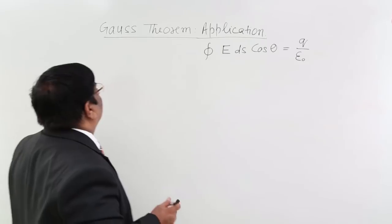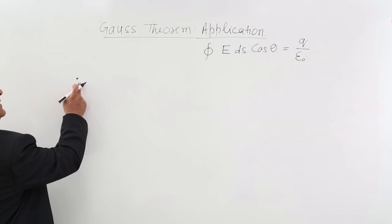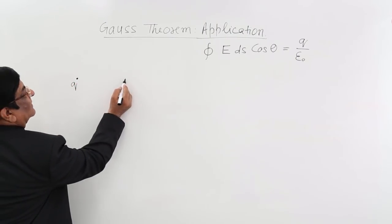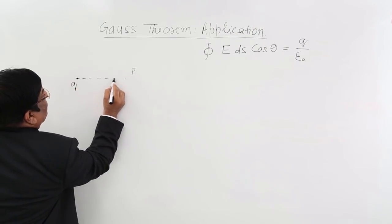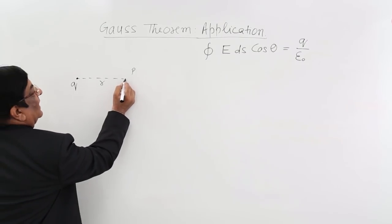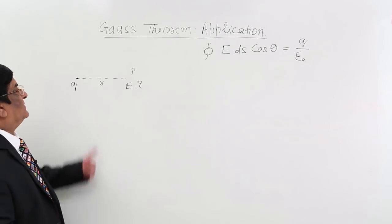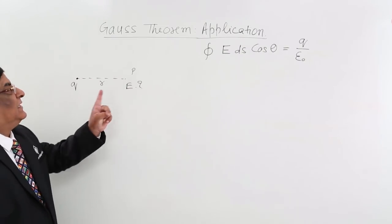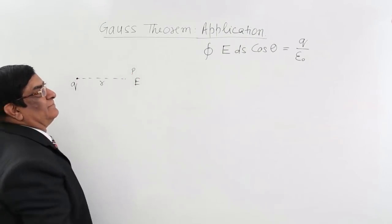I will tell you the steps using one example. The simplest example: there is a point charge — a particle of point size with certain charge Q. Because of this, I want to find out the electric field at point P, which is at a distance R. The given quantities are charge Q and distance R. I want to find out E using Gauss theorem.